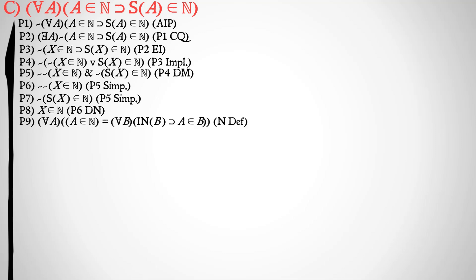Next up we're going to use the definition of a natural number — check that out in a previous video if you're curious. By definition, for all classes A, A is a member of N is identical to: for all B, if B is inductive, then A is a member of B. We're going to universally instantiate A to X, giving us: X is a member of N equals for all B, if B is inductive, then X is a member of B. We are also going to universally instantiate using the successor of X as A.